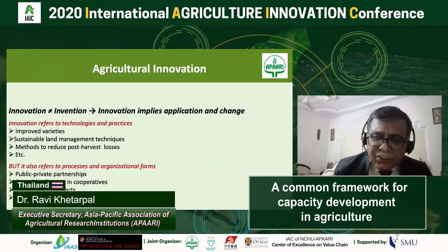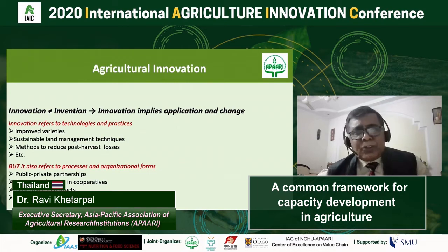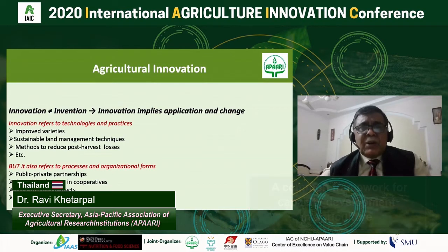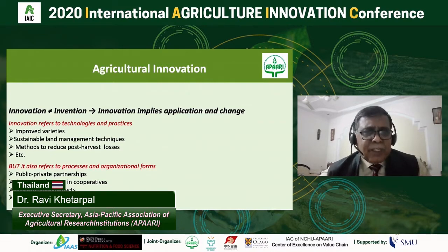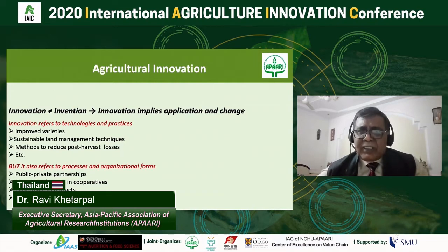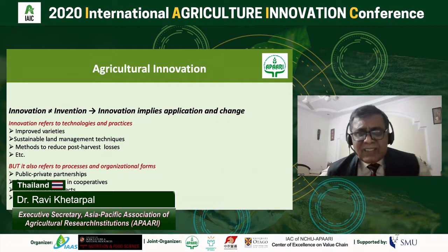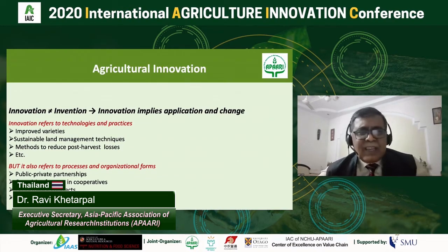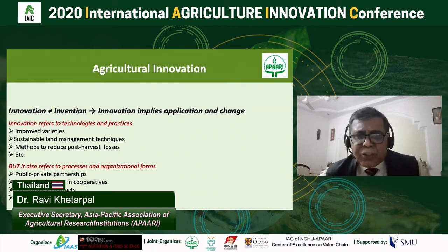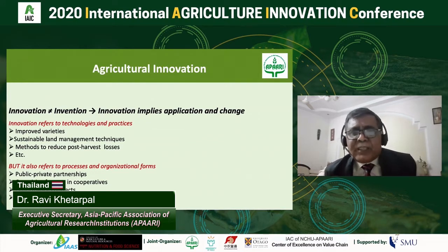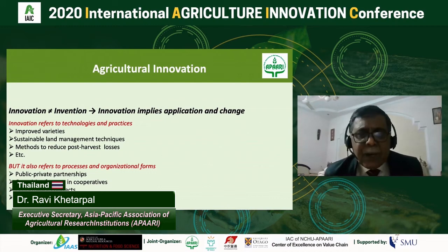There are now guidelines for agricultural innovation systems. What I'm going to say here is that the Tropical Agriculture Platform has developed a common framework for capacity development. In a nutshell, it provides concepts, principal approaches, and tools to better understand the agricultural innovation system architecture and assess capacity development needs. It also helps to plan, implement, monitor, and evaluate capacity development interventions. There are publications which have come up, and this common framework is now being applied in many countries.